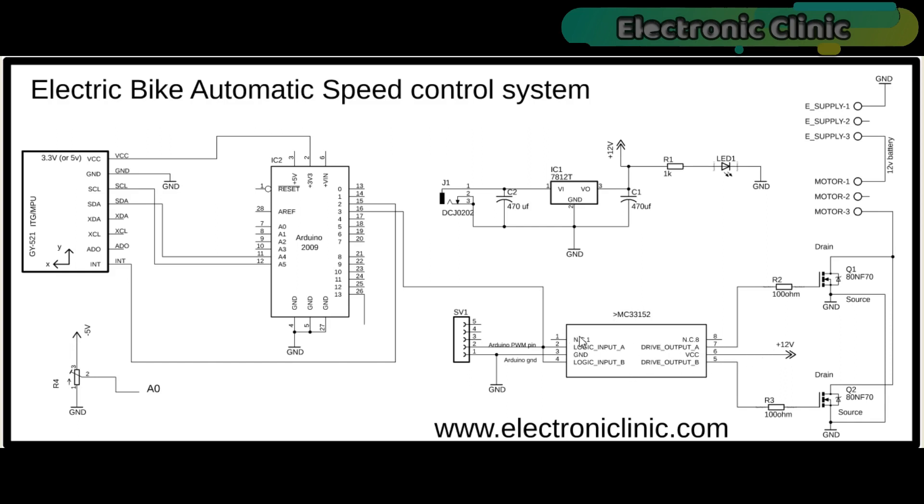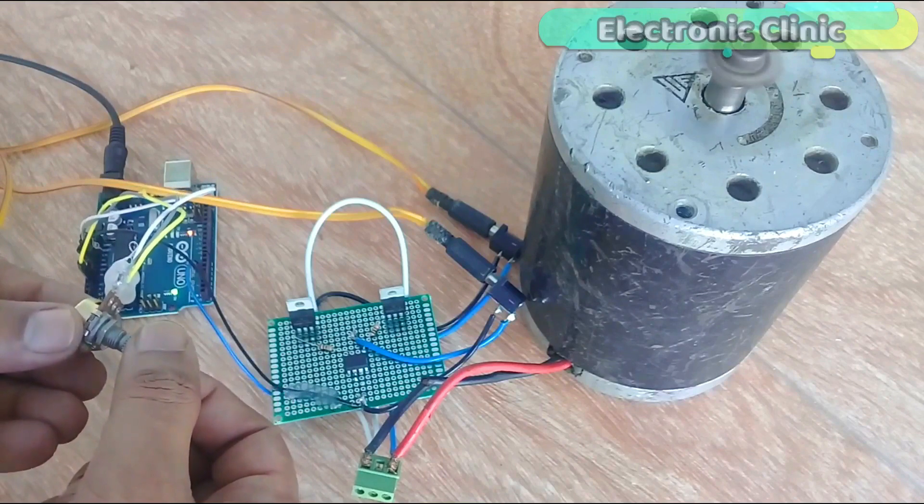Pin number 2 and pin number 4, which are the logic input A and logic input B, are connected together and connected with the Arduino's pin number 3, which is the PWM pin of the Arduino. Pin number 5 and pin number 7 are used to control the MOSFETs. As you can see, the drains are connected together and the sources of both the MOSFETs are also connected together. Over here we connect the motor, while over here we connect the 12 volts.